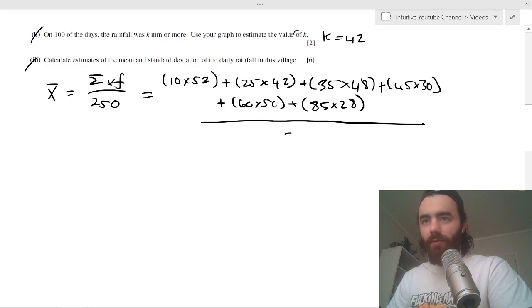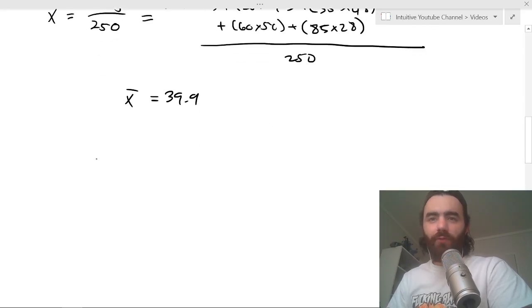Then you divide all of that by 250. If you put all that into your calculator, I did it before, you'll get 39.9. So that's your average or your mean daily rainfall in the village.